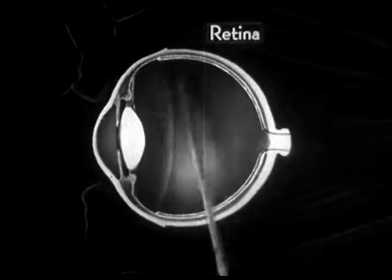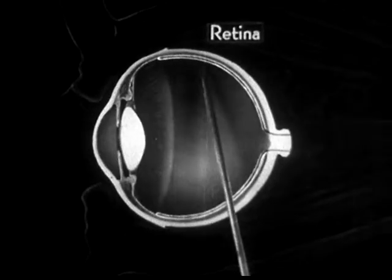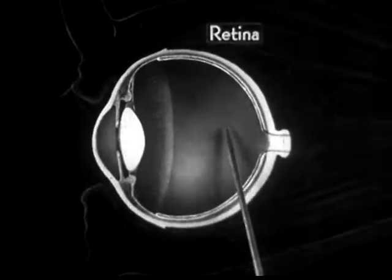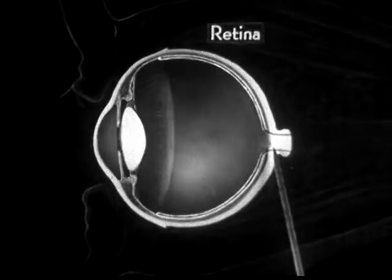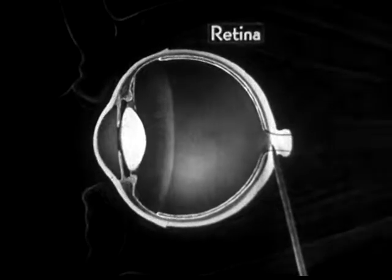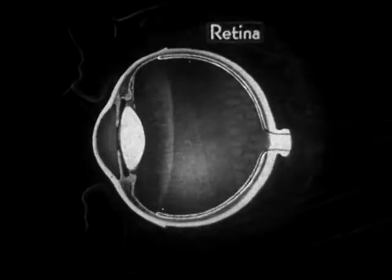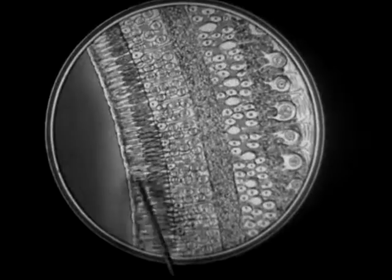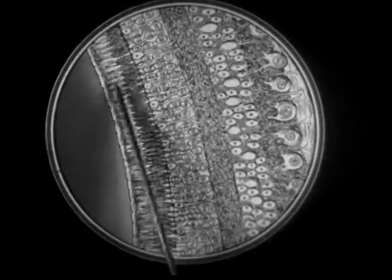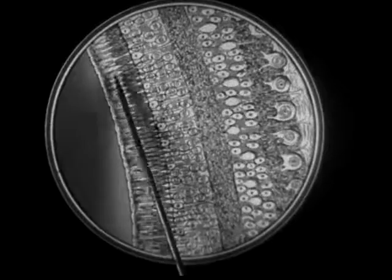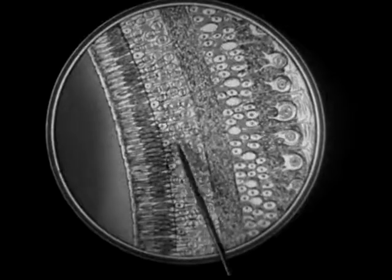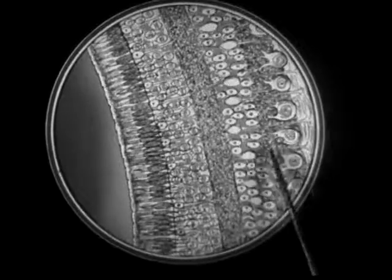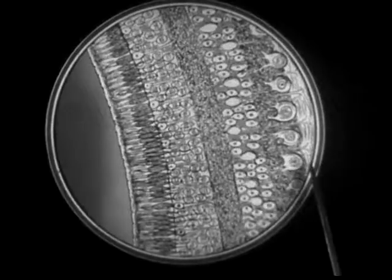The innermost layer of the eyeball is the retina, a very delicate membrane. The retina is actually a part of the optic nerve, which transmits the light impulses to our brain. The retina is the most important and complex structure in the eyeball. Magnified many hundred times, the retina is seen to consist of a complicated arrangement of rods and cones, which convert light waves into nerve impulses in some manner which even science of today cannot fully explain.